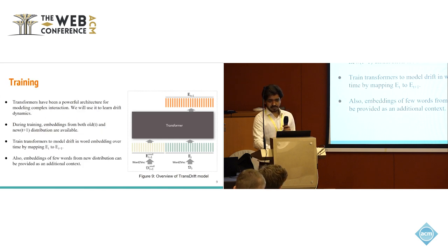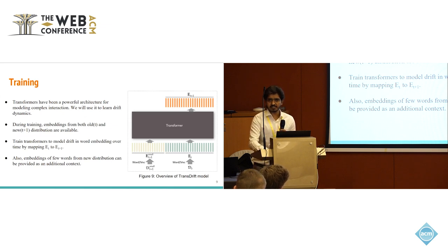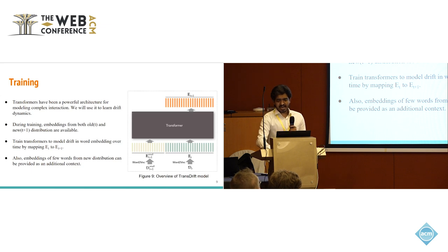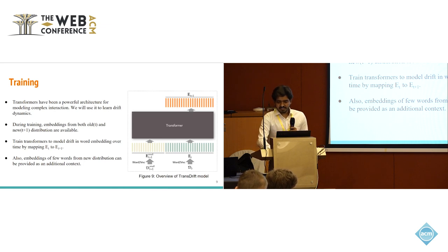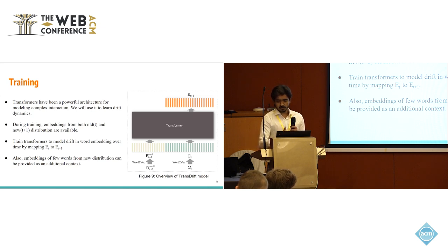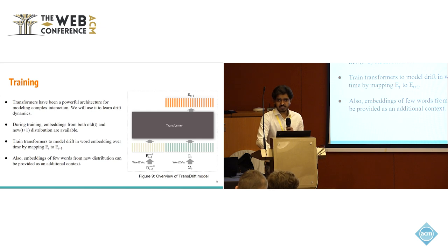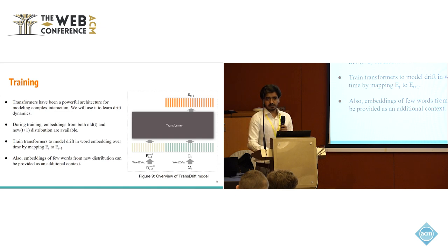So, how are we doing this? For training, we have used transformer architecture, as transformers have been powerful in modeling complex interactions. We leverage its ability to capture the dynamics of drift in word embeddings. During training, we have data from both old and new distributions. We train embeddings on both distributions — ET is the embedding trained on the old distribution, and ET+1 is the embedding trained on the shifted distribution. We train our TransDrift architecture by minimizing the cosine loss between the gold ET+1 and the embedding predicted by the model. We can also provide ET+1 small, trained on data from the shifted distribution, to give the model additional context.